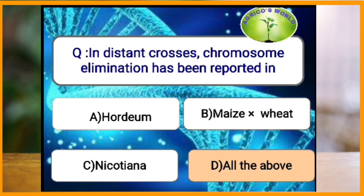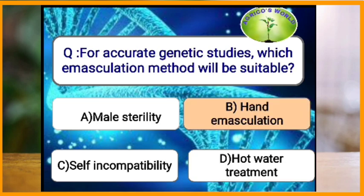In distant crosses, chromosome elimination has been reported in which organisms? In Hordeum-maize cross, wheat cross, and Nicotiana, chromosome elimination has been reported. Chromosome elimination is done to produce offspring suitable for cultivation.